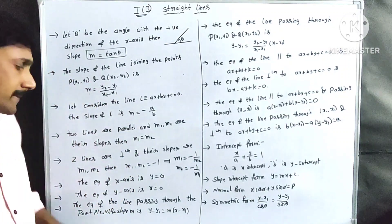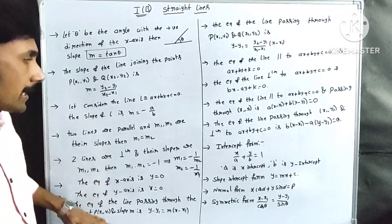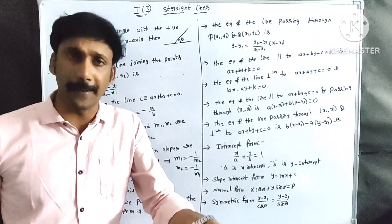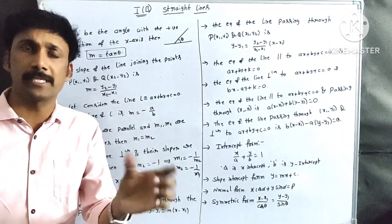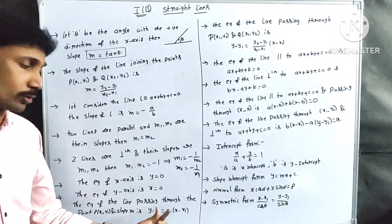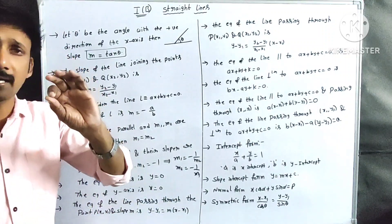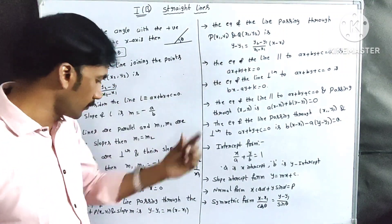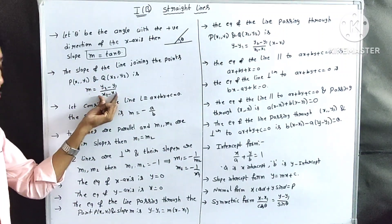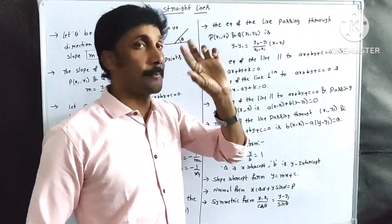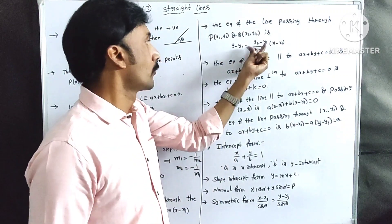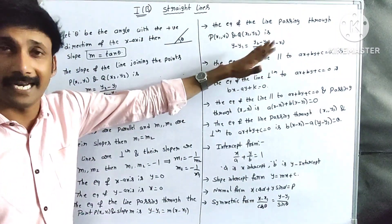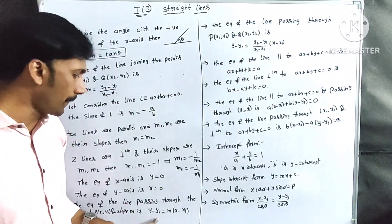The line equation formula through a point is: y minus y1 equal to m of x minus x1. For two points, replace m with the slope formula: y minus y1 equal to y2 minus y1 by x2 minus x1 into x minus x1. This is the two-point form of the line equation.